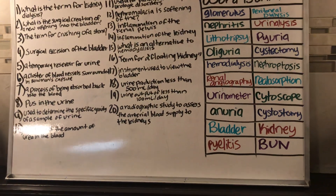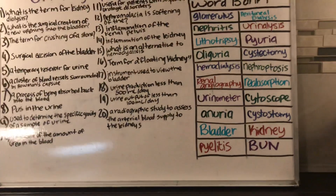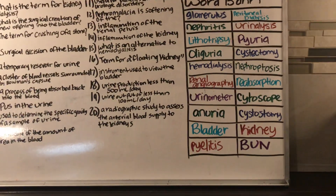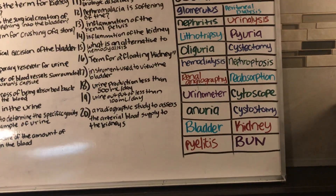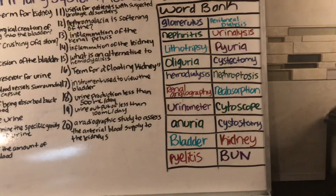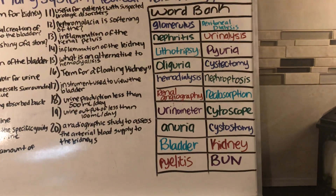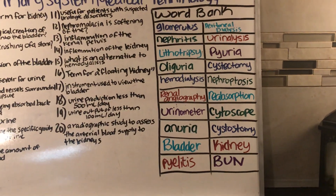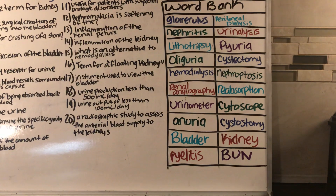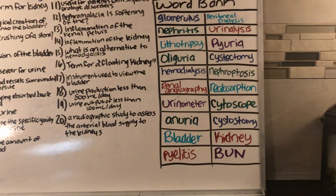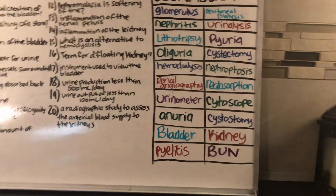And for the last one, number twenty: a radiographic study to assess the arterial blood supply to the kidneys is called what? Renal angiography.